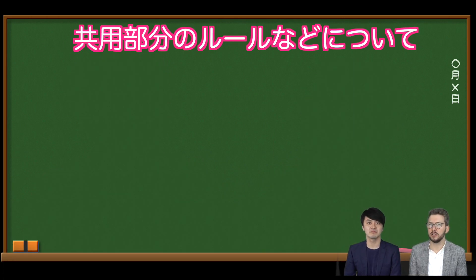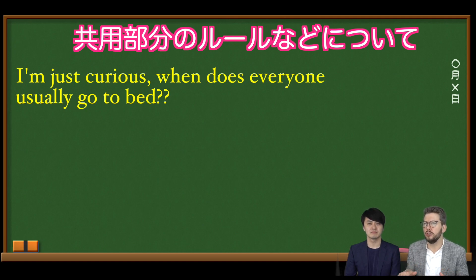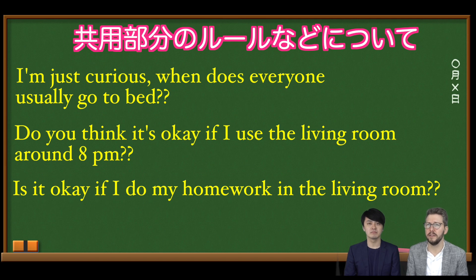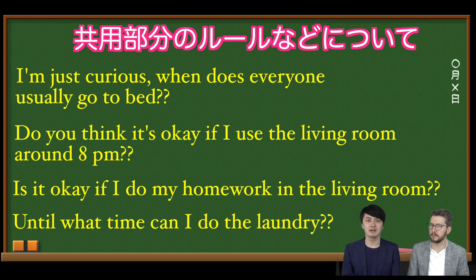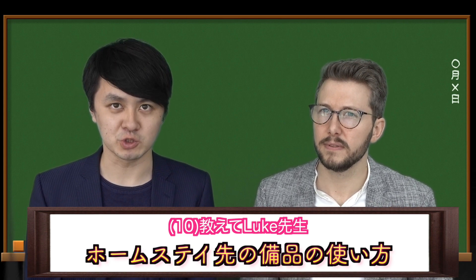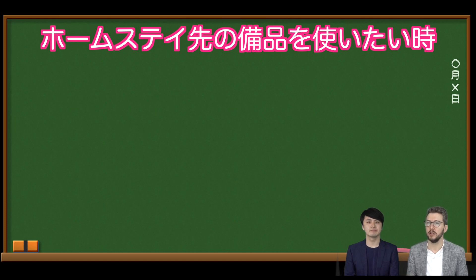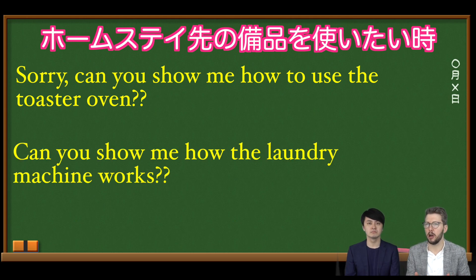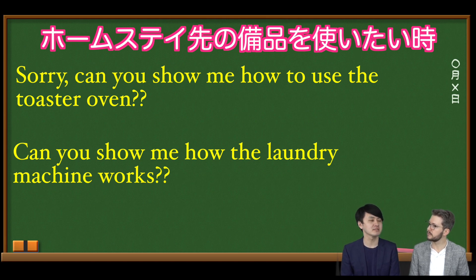You can also ask more specific questions about using shared spaces, such as: 'I'm just curious, when does everyone usually go to bed?' 'Do you think it's okay if I use the living room around 8pm?' 'Is it okay if I do my homework in the living room?' and 'Until what time can I do the laundry?' When you need to know how to use appliances, you can ask: 'Sorry, can you show me how to use the toaster oven?' or 'Can you show me how the laundry machine works?'